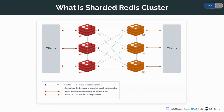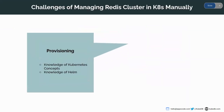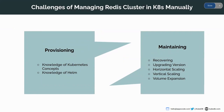Let's look at the challenges of deploying a Redis cluster in Kubernetes manually. First, you need to provision your database — requiring knowledge of Kubernetes concepts such as StatefulSets, Services, PersistentVolumes, and Helm. After deploying, you need to maintain your database: recovering from failure or disaster scenarios, updating versions when new ones arrive, performing vertical and horizontal scaling, and doing volume expansion when you have more data.